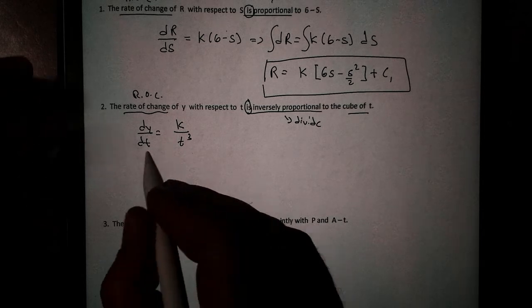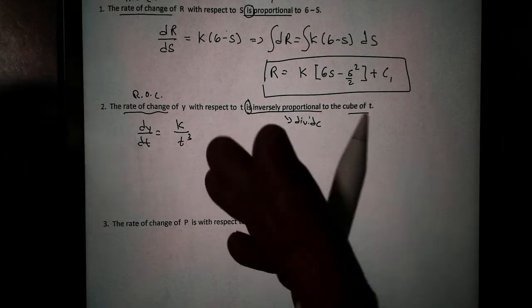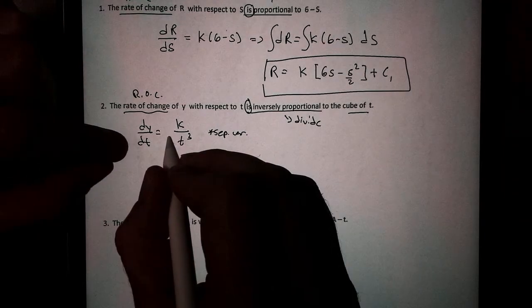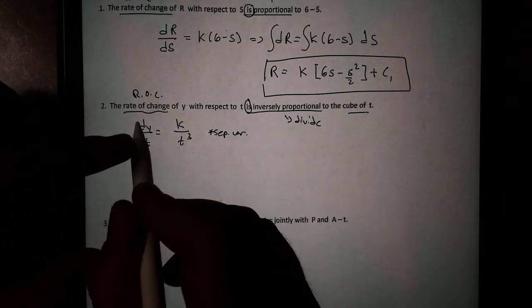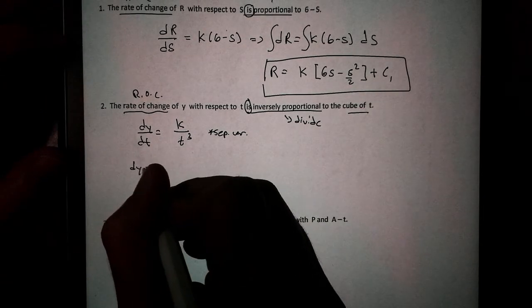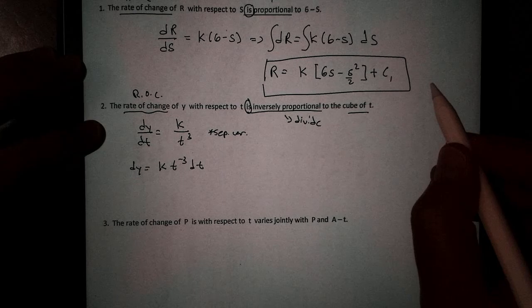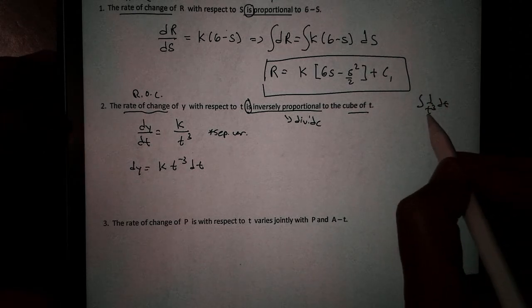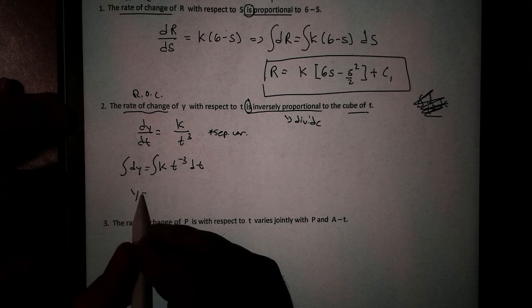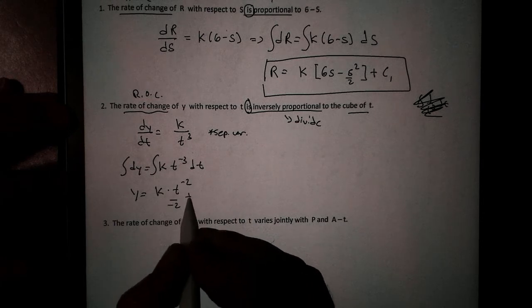And just like the last one, we are going to separate our variables. Our two variables are Y and T. Remember, K is a constant, like a number, like it's like 5. So when I separate my variables, I want my Y's on one side and my T's to the other side. Because Y is already on top, I'm going to keep my Y on the left side and bring my T's over. So this becomes dY equals K times T to the negative 3 dT. Be careful, because if I leave it like 1 over T cubed, you might be thinking, oh yeah, that's natural log. No. So bring the power up. And now we can integrate. We would get Y equals—K is a constant, I can leave it—times, we're going to add 1, T to the negative 2, over negative 2, plus C1.